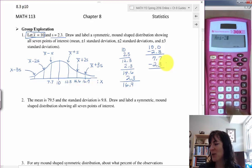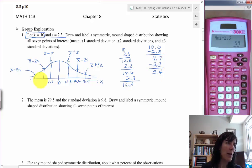And that'll go here, 5.4. Subtract off one more 2.3 and I get 3.1, and that goes way on the left, 3.1.